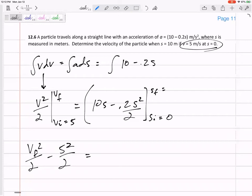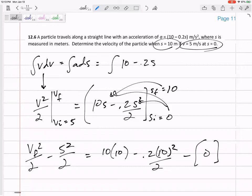And then if I plugged in S final, determine the velocity when S is equal to 10. So plug in 10.2, 10 squared over two. And yeah, I should plug, if I plug in zero to both of those, there would be zero.